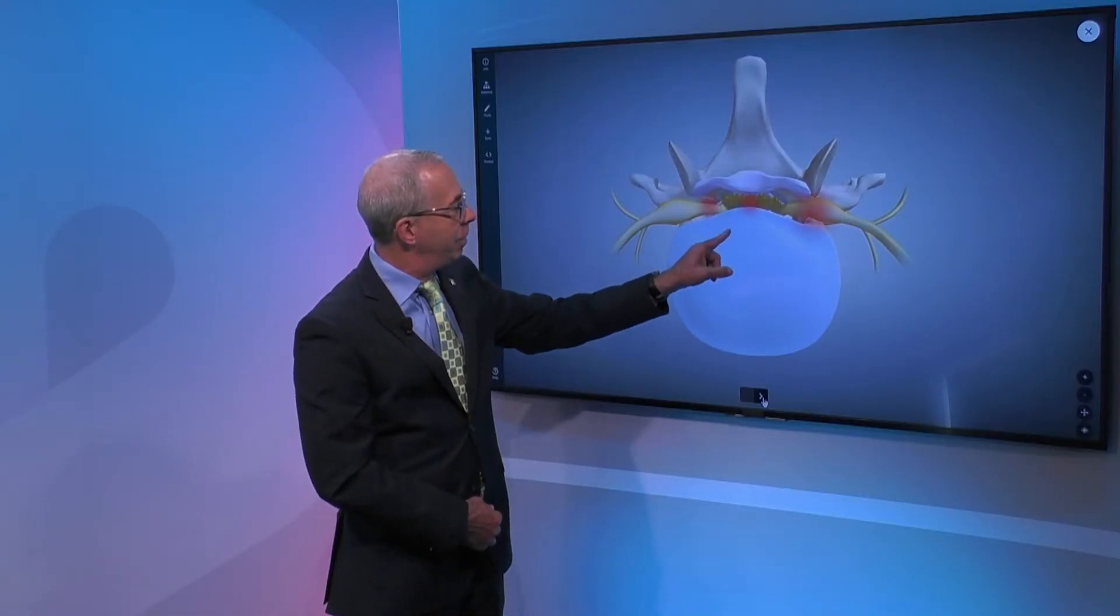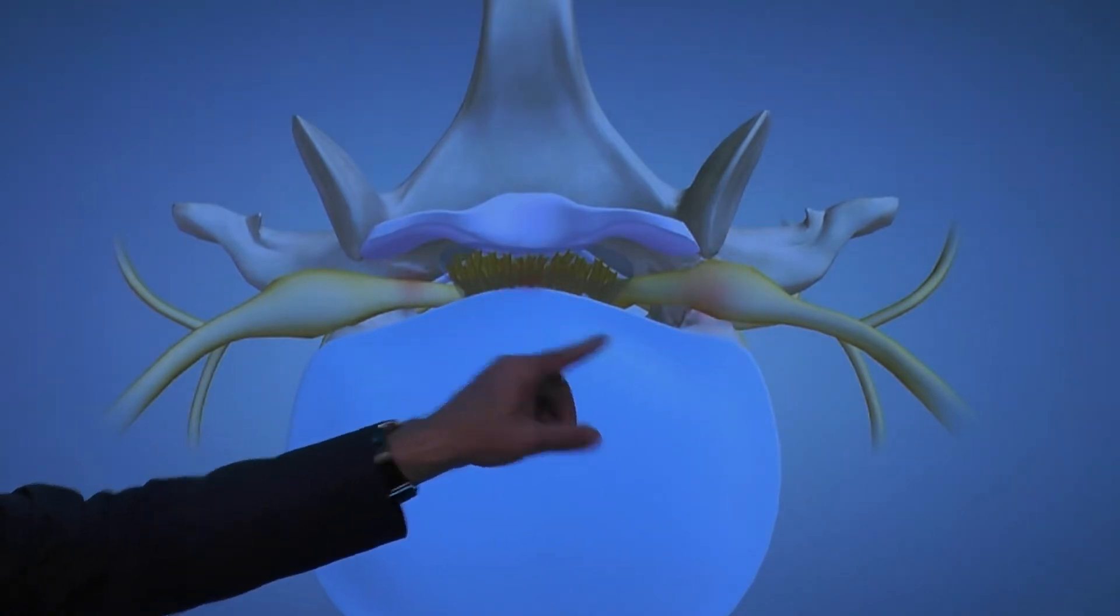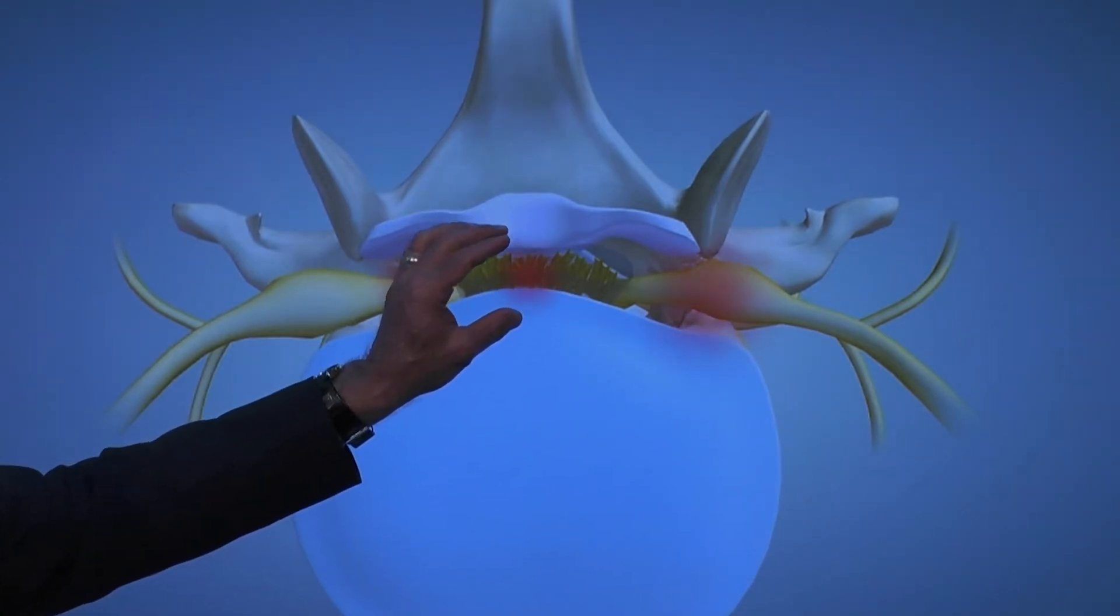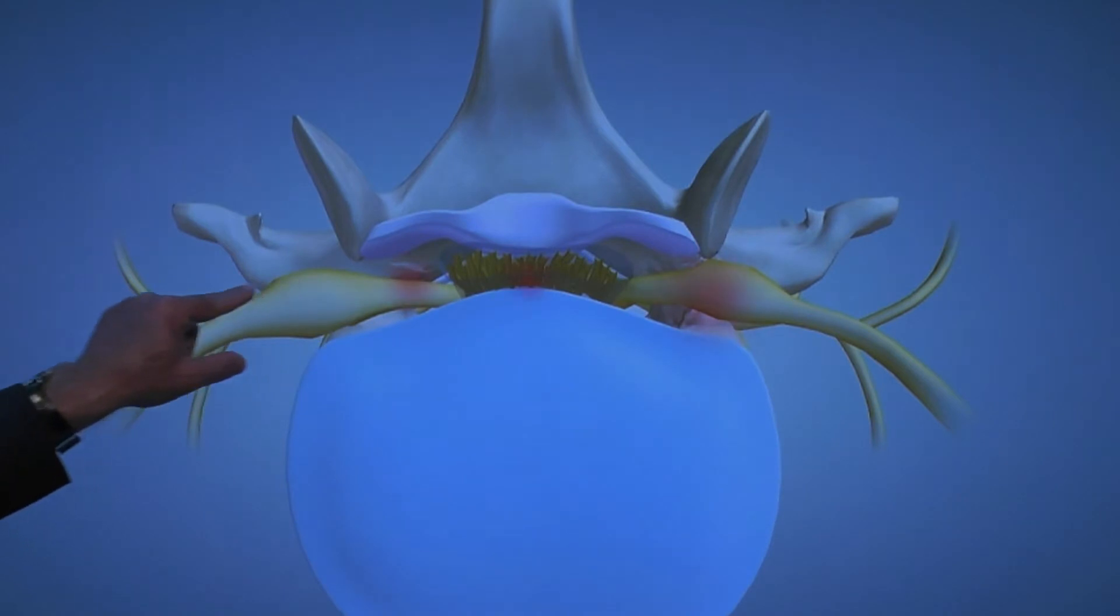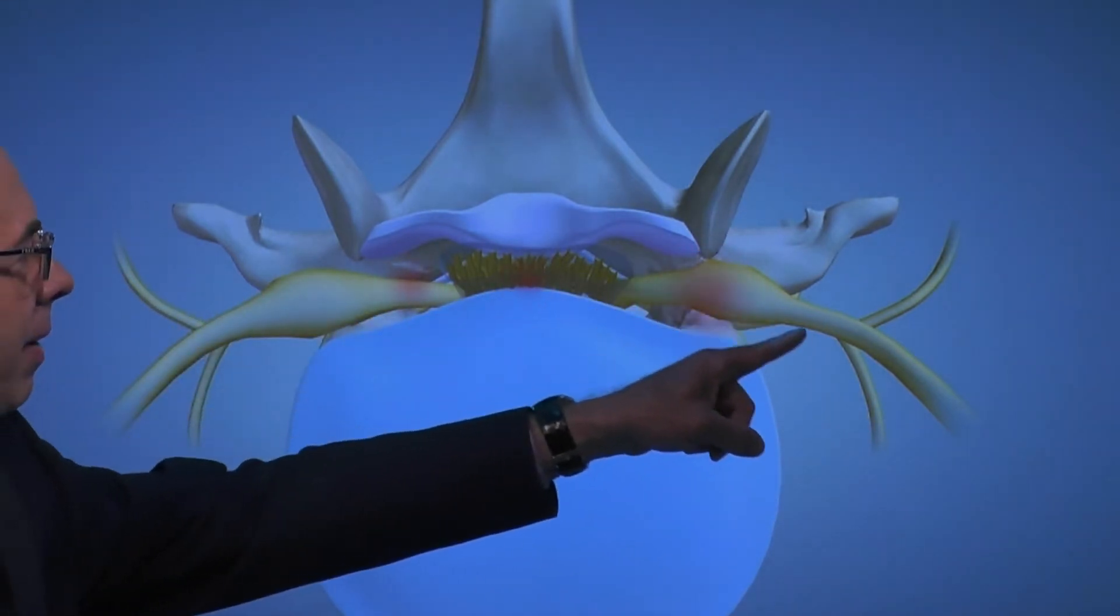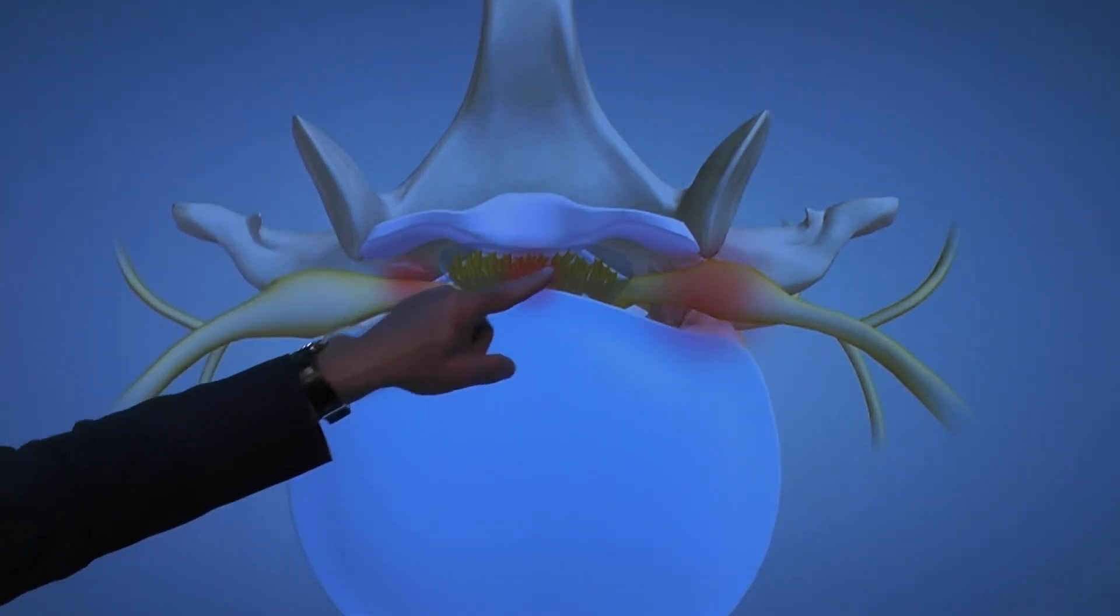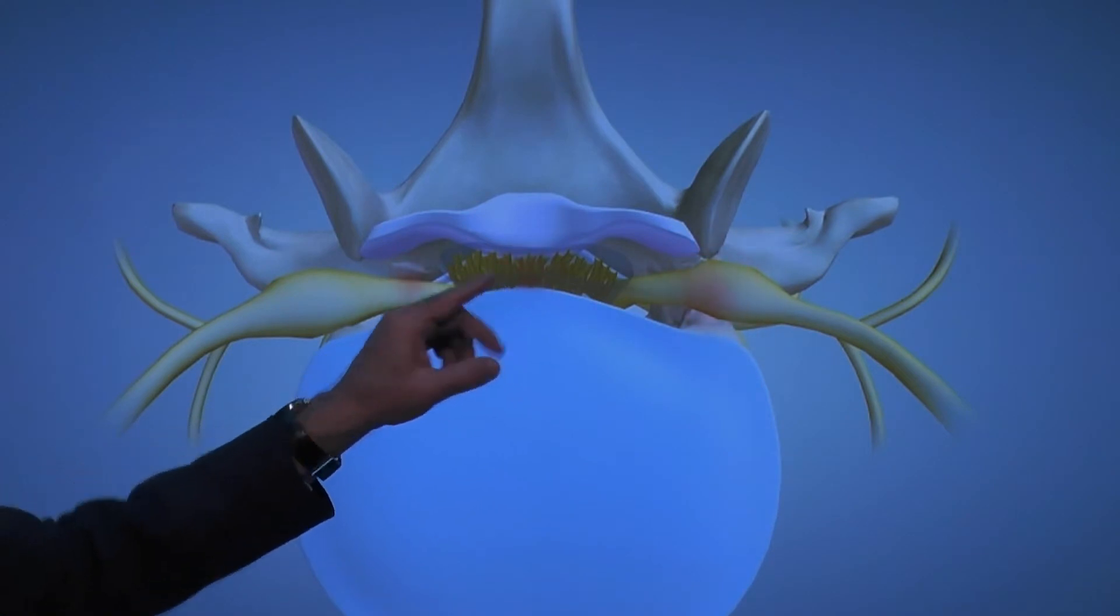This canal should be round, but what's happening here is the disc is bulging back into the canal and causing compression of those nerves. These are the nerves that come out the side. When these are compressed or all the nerves are compressed in the canal, we call that condition lumbar spinal stenosis.